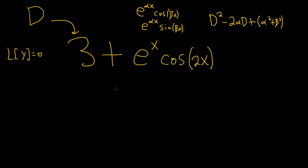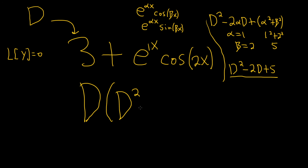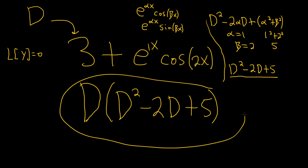All right, so all we have to do now is apply the formula to this. So alpha here is 1, and beta is 2. So the annihilator for this exponential trigonometric term will be D squared minus 2D plus — and this piece here will be 1 squared plus 2 squared, so 1 plus 4 is 5. So this will annihilate this piece. So the final answer would be D times the quantity D squared minus 2D plus 5. This would be the annihilator for this function.